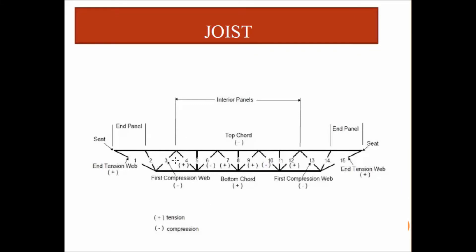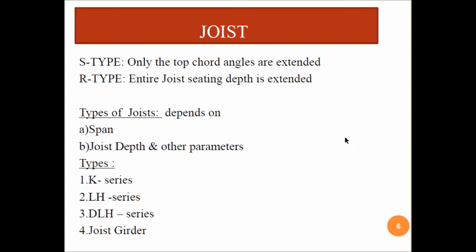We have different types of joists. The types depend upon the span and joist depth. The main series are the K series, LH series, DLH series, and Joist Girder, which will be explained one by one in the next slides.